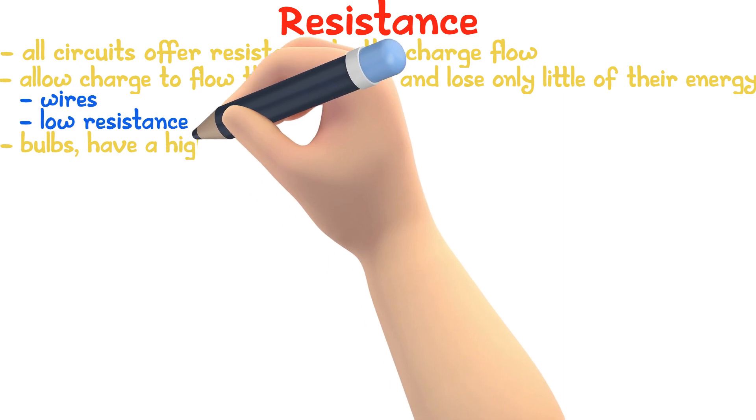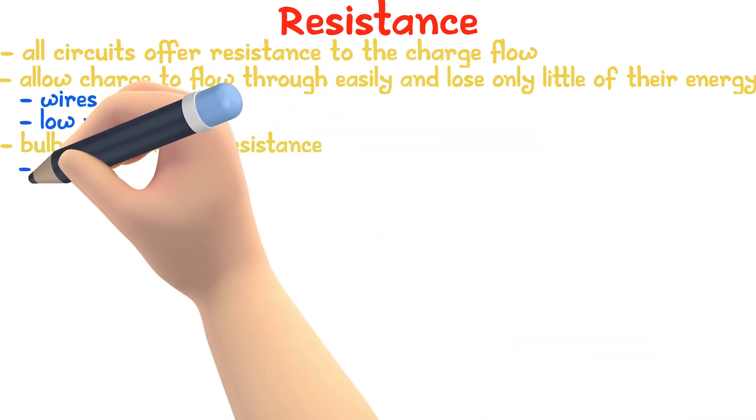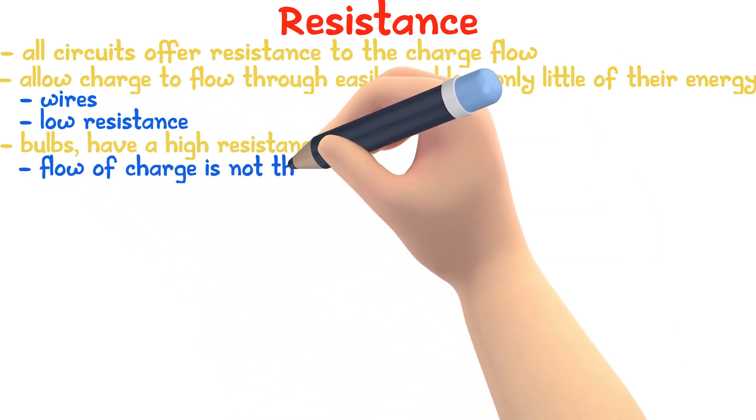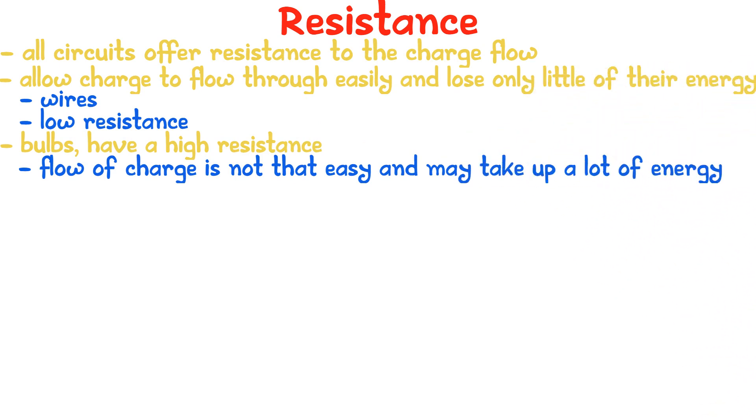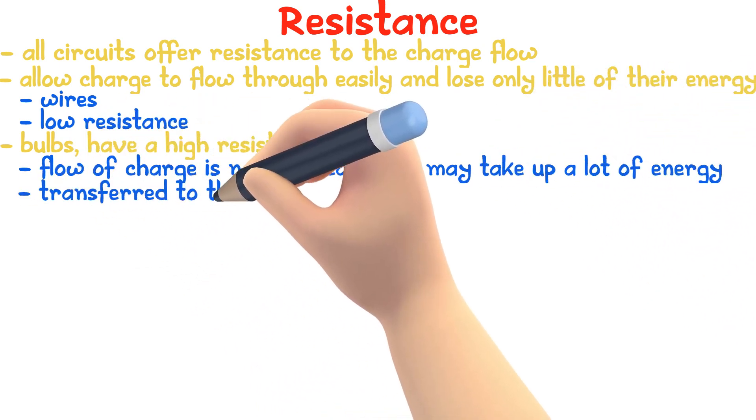Components such as bulbs have a high resistance. This means that the flow of charge through these components is not that easy and might take up a lot of energy. This energy is transferred to the environment as heat.